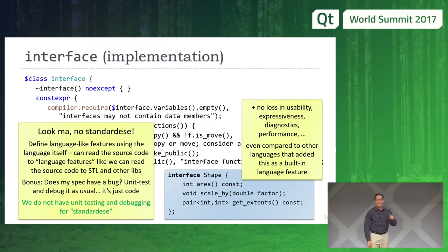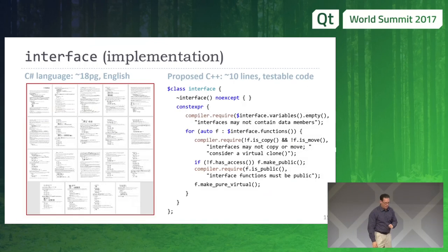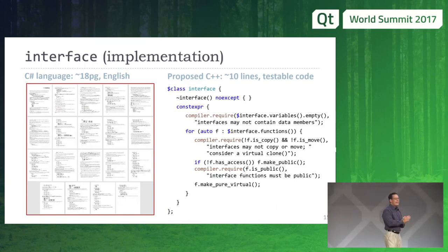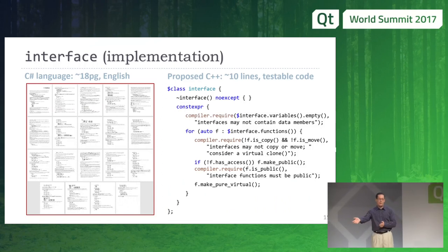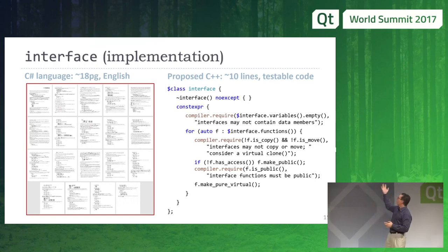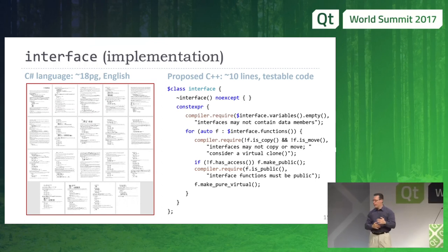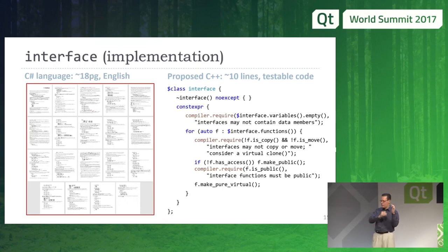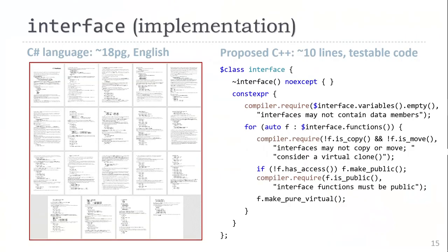If you don't believe me, great — because I have a demo. In case you're wondering why I said 'add 18 pages to C++': that's the C# language spec, roughly the same granularity as C++. There is a screenshot of the actual current C# spec for interface — it's 18 and a half pages. And I believe the code on the right-hand side is essentially identical in meaning.